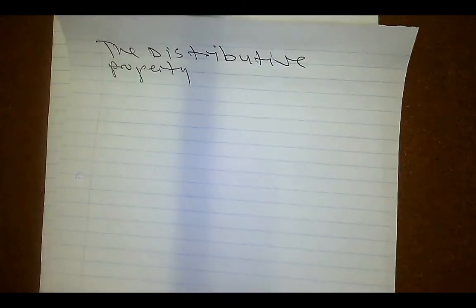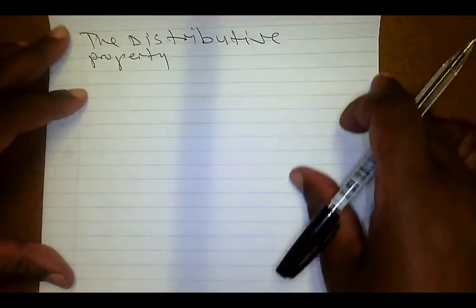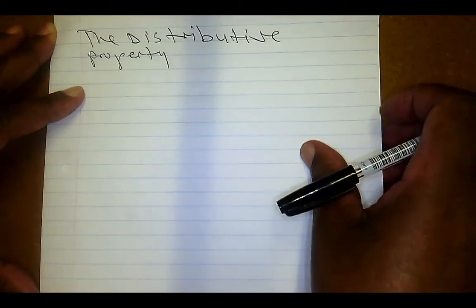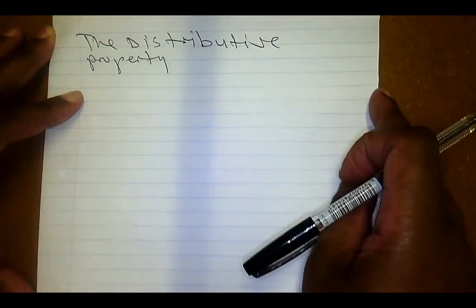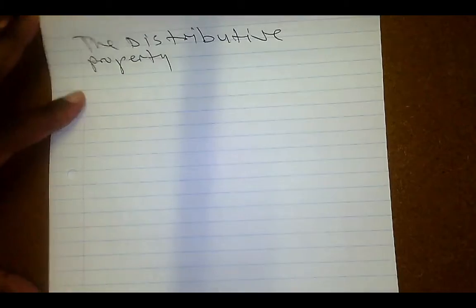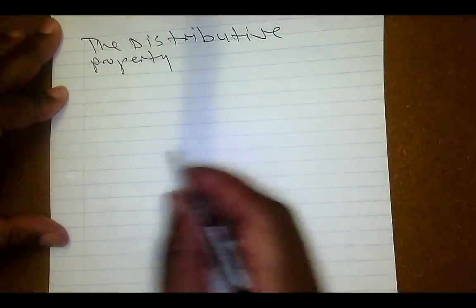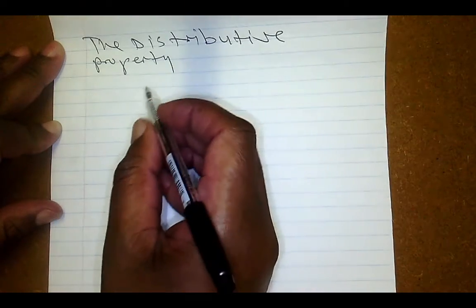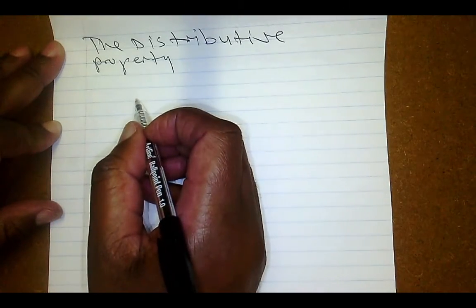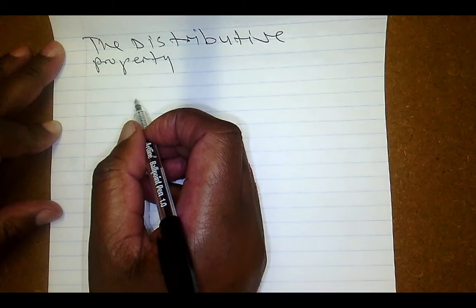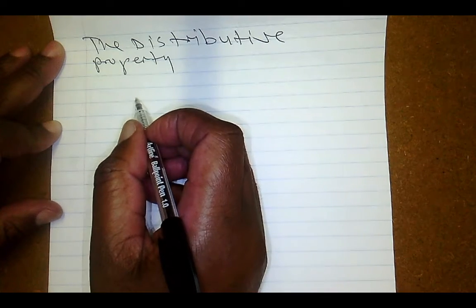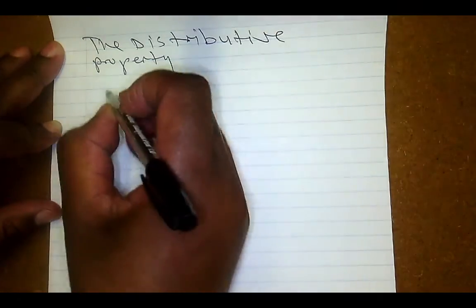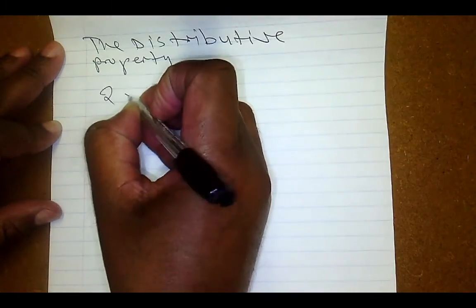The third property is called the distributive property. The distributive property is applicable when we are multiplying a single number by a sum of other numbers or by a difference of other numbers.